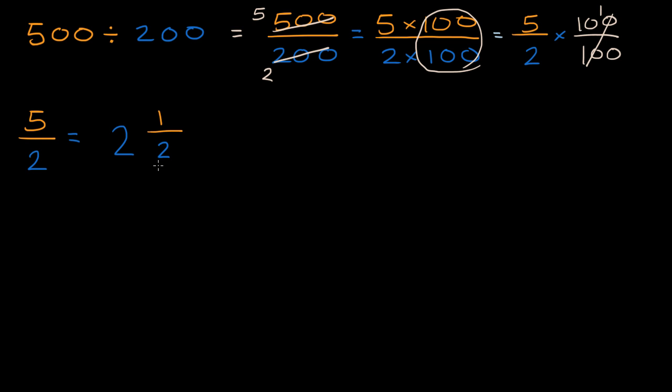And now how do we express this right over here as a decimal? Well, you might recognize that one half is the same thing as five tenths. So this is going to be equal to two and five over 10. Which of course, we can write as 2.5, or two and five tenths. So 500 divided by 200 is 2.5.